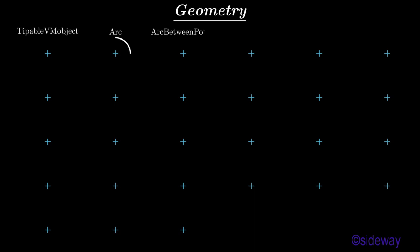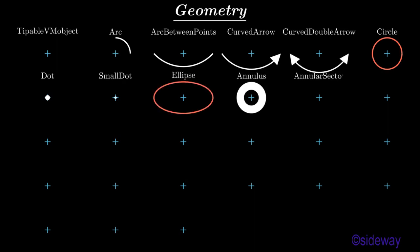Tipable beam object, arc, arc between points, curved arrow, curved double arrow, circle, dot, small dot, ellipse, annulus, annular sector, and sector.